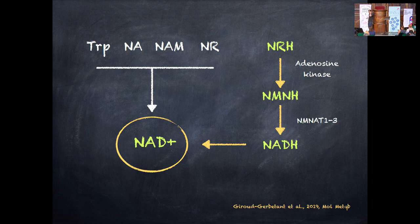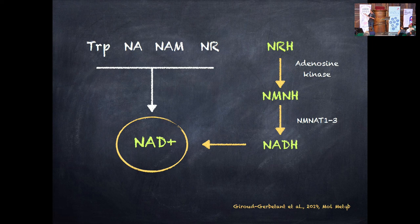The second surprise was that NRH is powerful probably because it uses a completely different metabolic route towards NAD. Tryptophan, nicotinic acid, nicotinamide, and NR all use their own paths. We believed NRH would use the same path as NR, but it does not. We described in 2019 — later confirmed by Professor Sobe from Cornell — that the first step for NRH metabolism is a phosphorylation catalyzed by adenosine kinase, which then drives the pathway towards NAD.